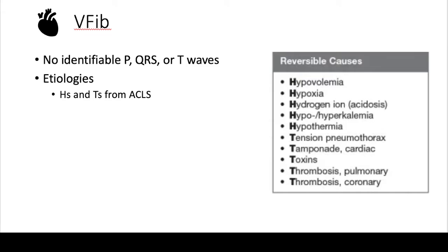The etiology includes all the things we learned in ACLS training — the H's and T's: pneumothorax, tamponade, toxins, PE, and ACS. Whenever you have someone in V-fib, you want to be thinking about these reversible causes.